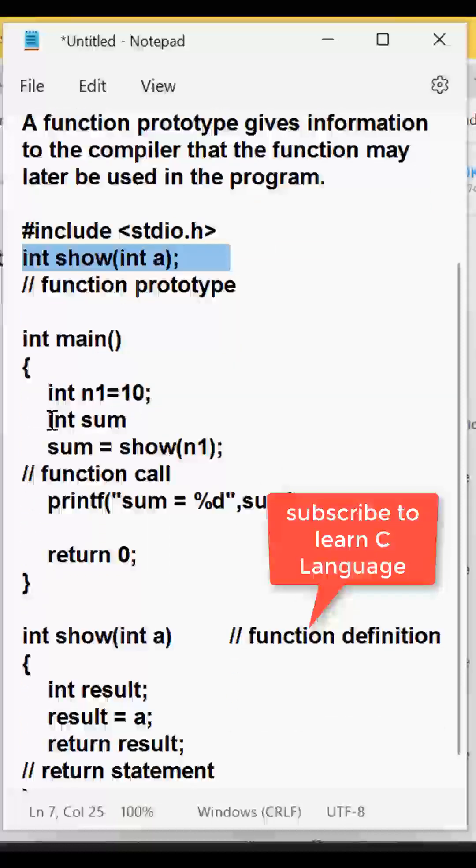So here n1 equals to 10, sum equals show of n1. I have passed here n will be coming to this a variable and a variable will be returned in the form of result to the sum and then sum will be printed. This is part of the function prototype.